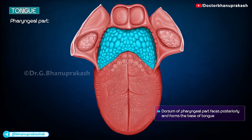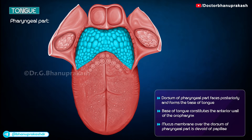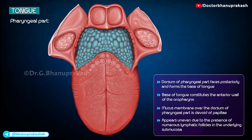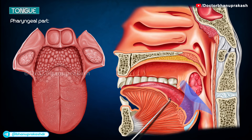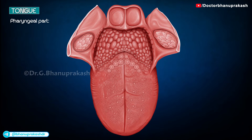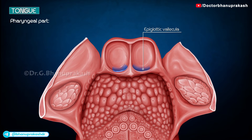The dorsum of the pharyngeal part faces posteriorly and makes up the base of the tongue, which forms the anterior wall of the oropharynx. The mucous membrane on the dorsum of the pharyngeal part is devoid of papillae; it appears uneven due to the presence of numerous lymphatic follicles in the underlying submucosa, collectively known as the lingual tonsil. Posteriorly, it is reflected onto the front of the epiglottis as the median glossoepiglottic fold, and onto the lateral wall of the pharynx as lateral glossoepiglottic folds. The space on each side of the median glossoepiglottic fold is known as the epiglottic vallecula.